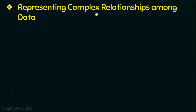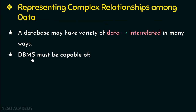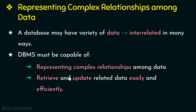The next advantage is representing complex relationships among data. A database can have a variety of data stored in different tables, and these data can be interrelated in many ways. DBMS must be capable of representing any kind of relationships among the data, and also retrieving and updating related data easily and efficiently.